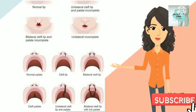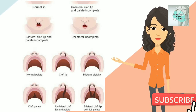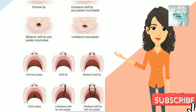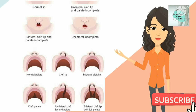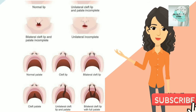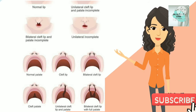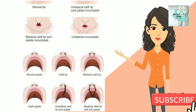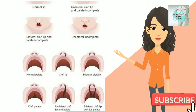This separation often extends beyond the base of the nose and includes the bones of the upper jaw and/or upper gum. A cleft palate is a split or opening in the roof of the mouth. A cleft palate can involve the hard palate and/or the soft palate. Cleft lip and cleft palate can occur on one or both sides of the mouth. Because the lip and the palate develop separately, it is possible to have a cleft lip without a cleft palate, or a cleft palate without a cleft lip, or both together.